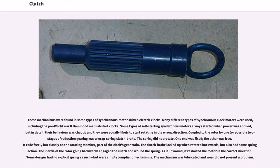These mechanisms were found in some types of synchronous motor-driven electric clocks, including the pre-World War II Hammond manual start clocks. Some types of self-starting synchronous motors always started when power was applied, but their behavior was chaotic and they were equally likely to start rotating in the wrong direction. Coupled to the rotor by one or two stages of reduction gearing was a wrap spring clutch brake. The spring did not rotate — one end was fixed, the other free, riding closely on the rotating member in the clock's gear train. The clutch brake locked up when rotated backwards, but also had some spring action; the inertia of the rotor going backwards engaged the clutch and wound the spring, which as it unwound restarted the motor in the correct direction.